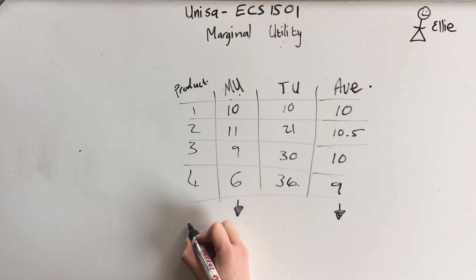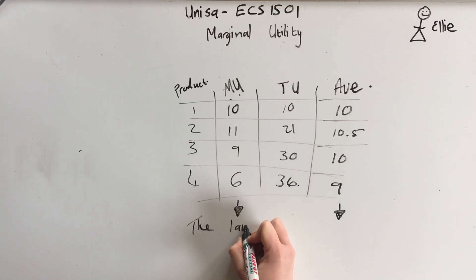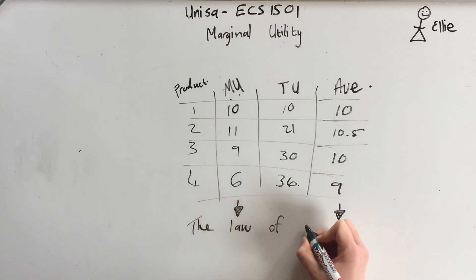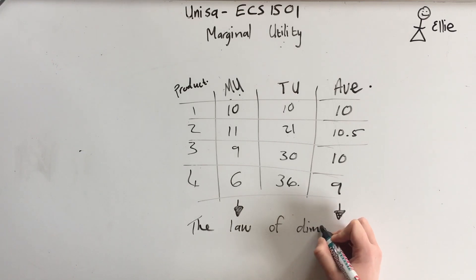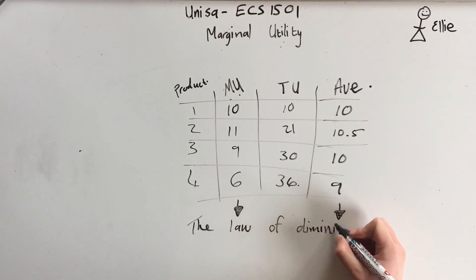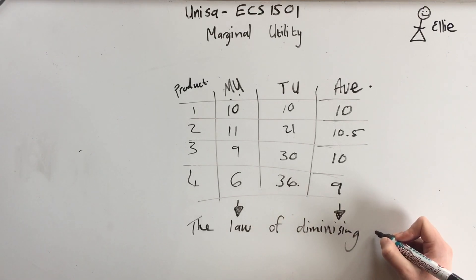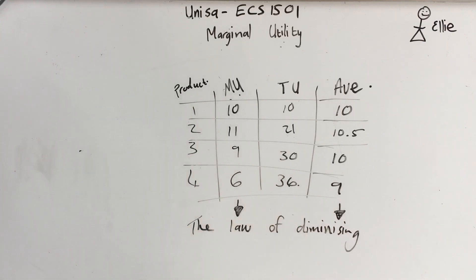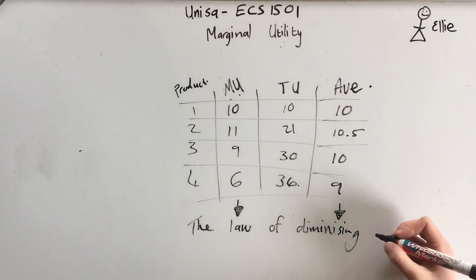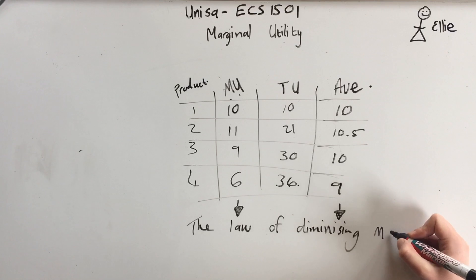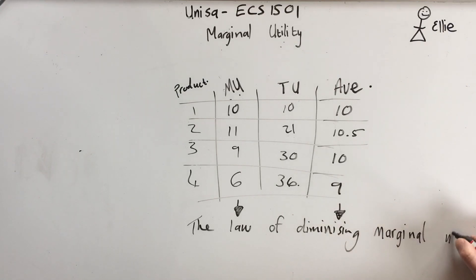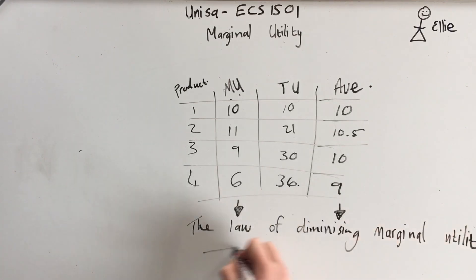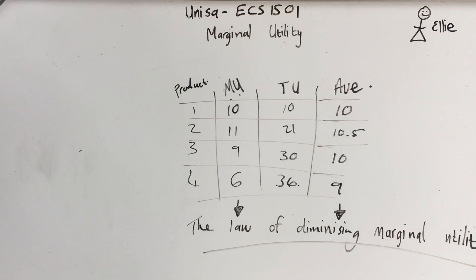This has to do with a very important law: the law of diminishing marginal utility. That's short and sweet today, but that is what marginal utility is.